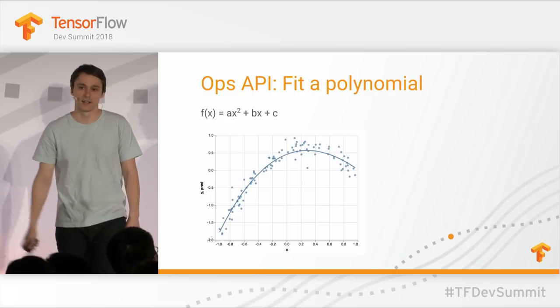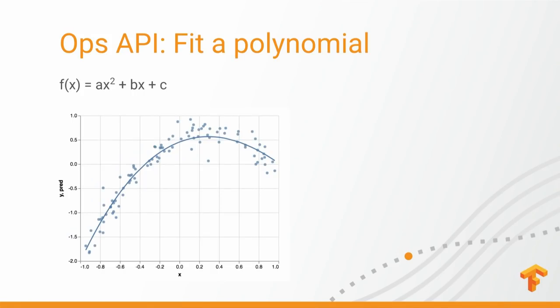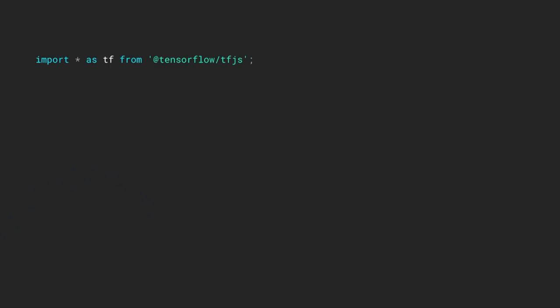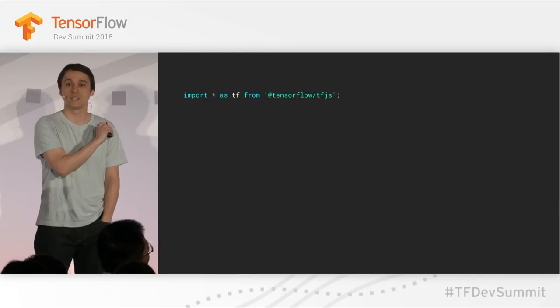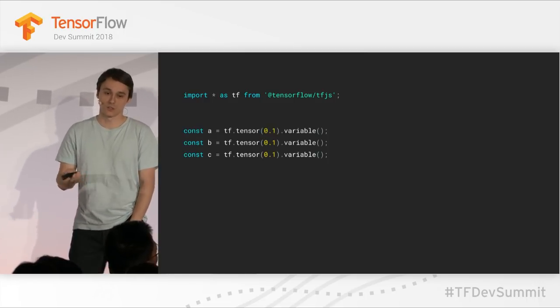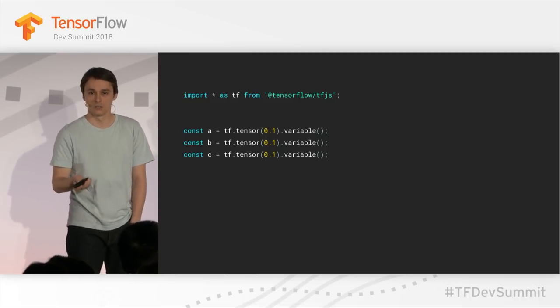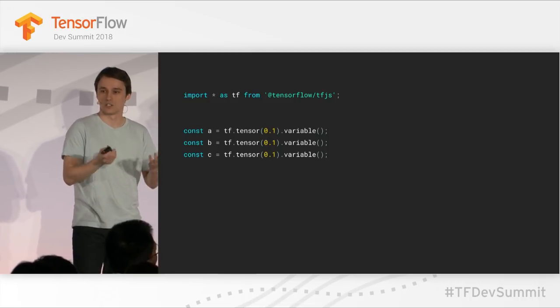To show you an example of our API, we're going to go over a small program that tries to learn the coefficients of a quadratic function — the coefficients a, b, and c from data. We have our import of tf from TensorFlow.js — this is a standard ES6 import in JavaScript, very common. We have our three tensors a, b, and c, marked as variables, which means they are mutable and the optimizer can change them.